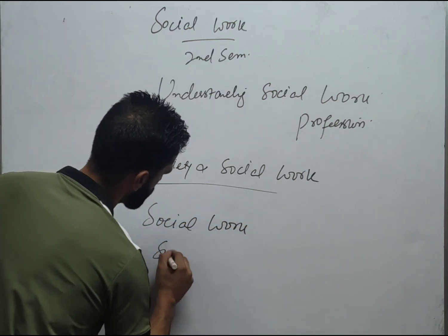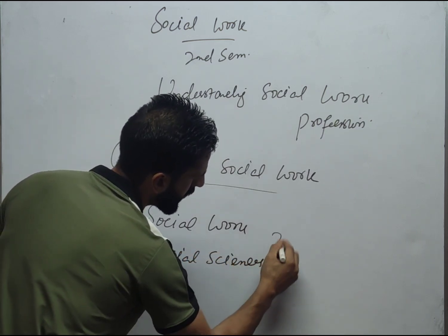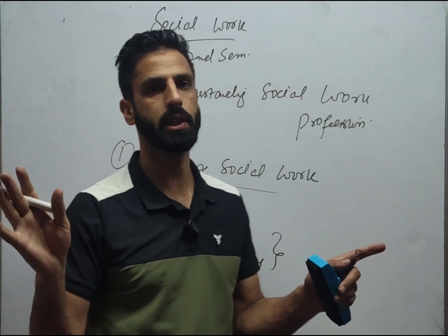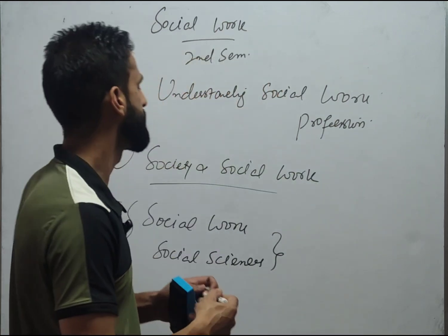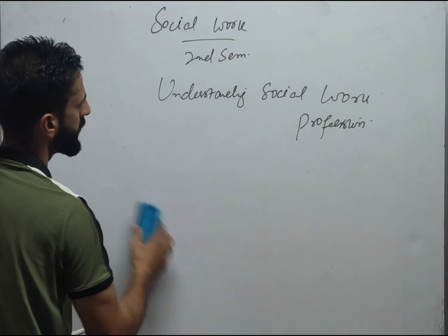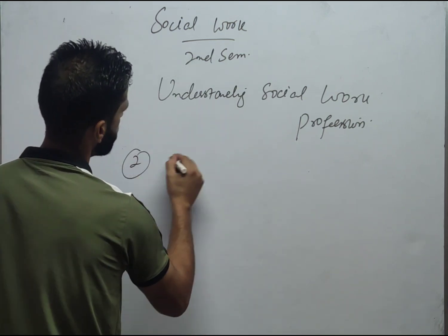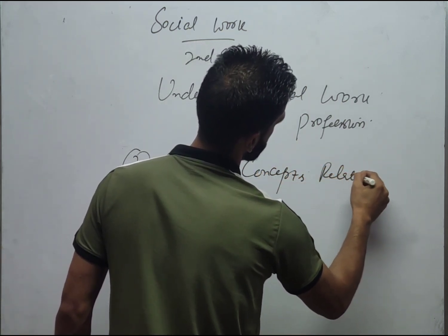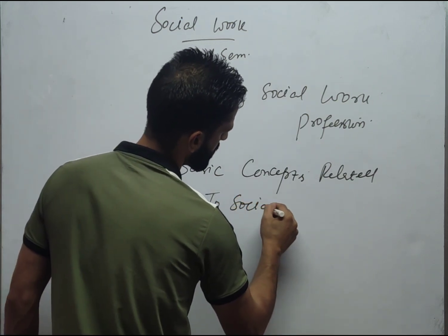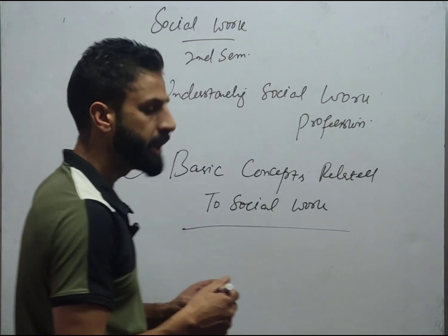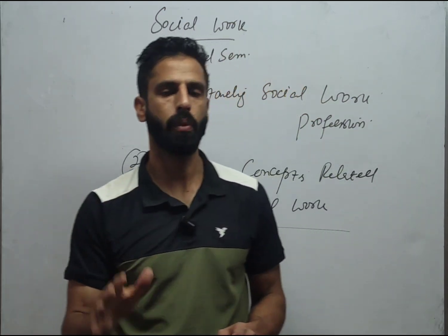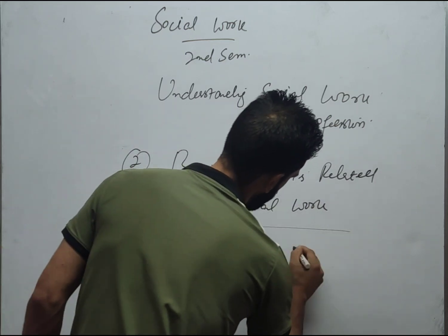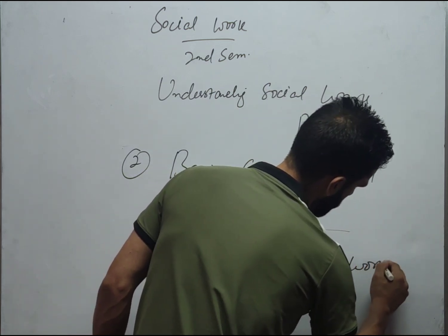From unit one, Social Work and Social Sciences, one guess question is: define Social Work and Social Sciences. From unit two, Basic Concepts Related to Social Work, one question expected is about the characteristics. Another important question from unit two is: From Charity to Social Work as a Profession.